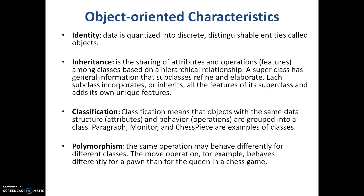What are the different characteristics of object-oriented? There are four things: identity, inheritance, classification, and polymorphism. In the case of identity, data is quantized into discrete distinguishable entities called objects — every object has its inherent identity. For example, if I have two mangoes they both belong to the same class called fruits, but both mangoes have individual identity, like twins who may look alike but are two individual identities.